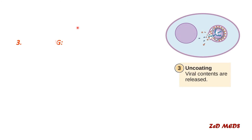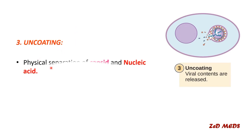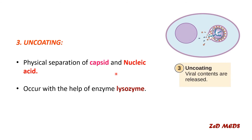The next step is uncoating — the physical separation of the capsid and the nucleic acid inside the cell. This occurs in the presence of the enzyme lysozyme. When the virus enters the cell, it loses its outer layer and capsid upon entering.